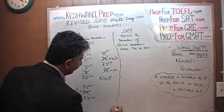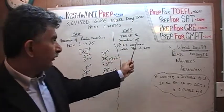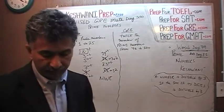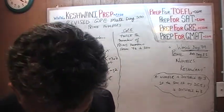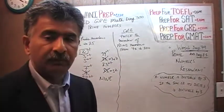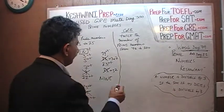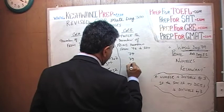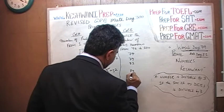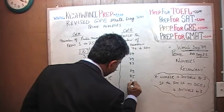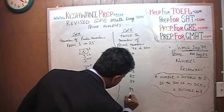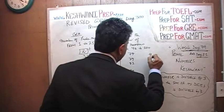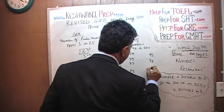Let's move on to Column B. They are asking for twice the number of prime numbers from 76 to 100. So we are going to locate all the prime numbers from 76 to 100. Here we go: 77, 79, 81, 83, 85, 87, 89, 91, 93, 95, 97, and 99.